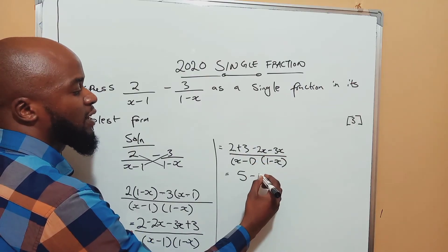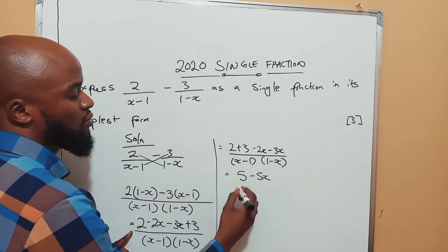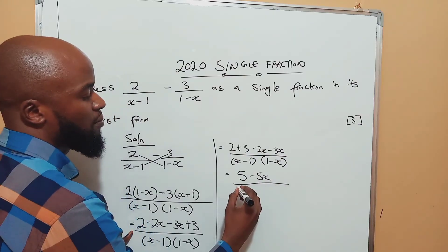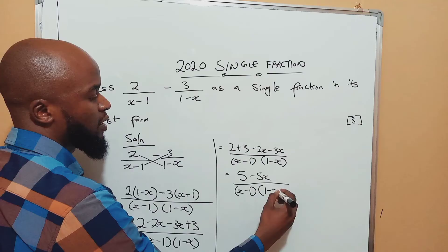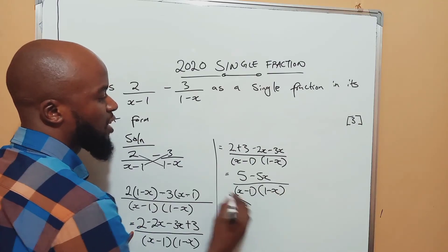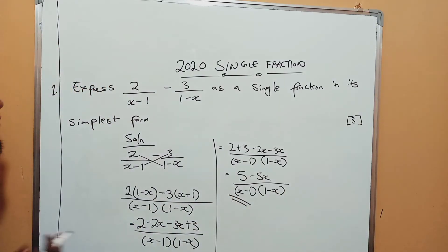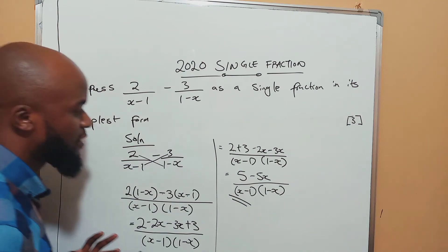What do we have? We're about to be done. So 2 plus 3 is 5. Negative 2x minus 3x is negative 5x - same signs you add, the sign from the bigger number. So x minus 1, 1 minus x. You end here, that's your three marks. You see how that is easy? Very easy.